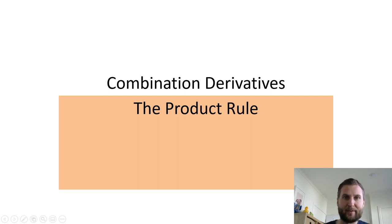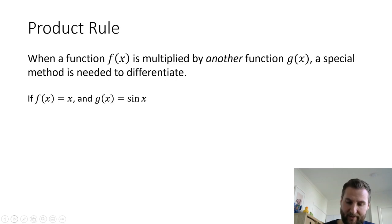Product comes from algebra, meaning when two functions are multiplied together we say it's a product. A times B is the product of A and B. The product rule says that when two functions, f and g, are multiplied together, we need a special method to calculate the derivative.